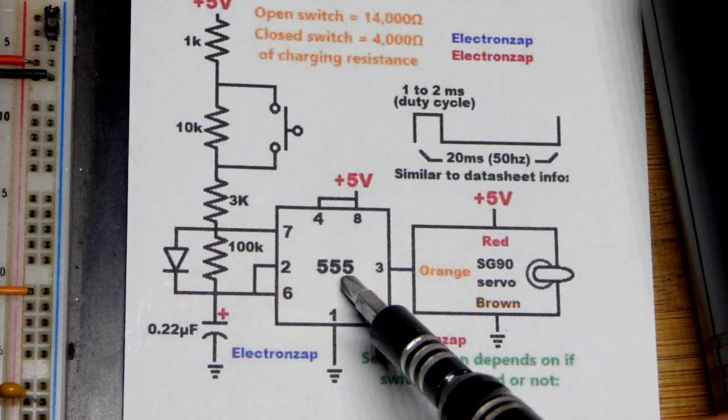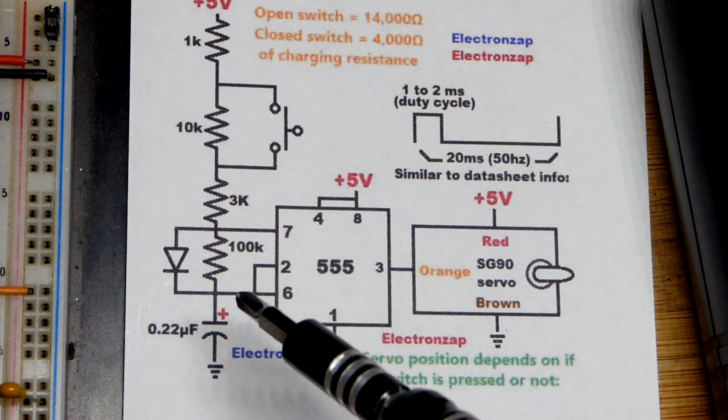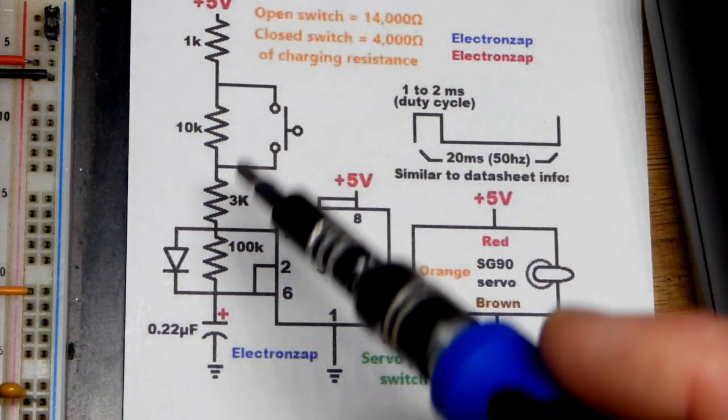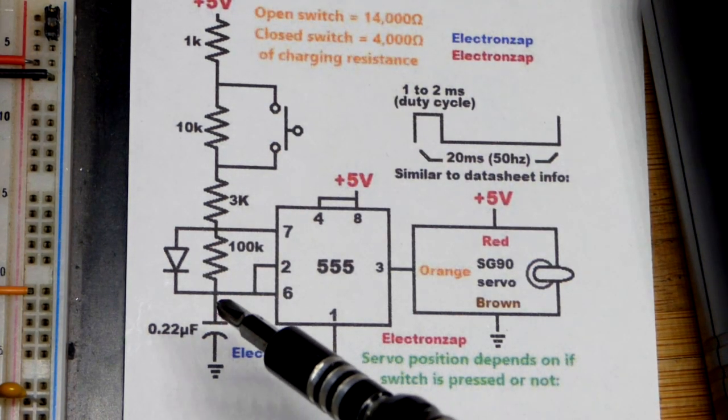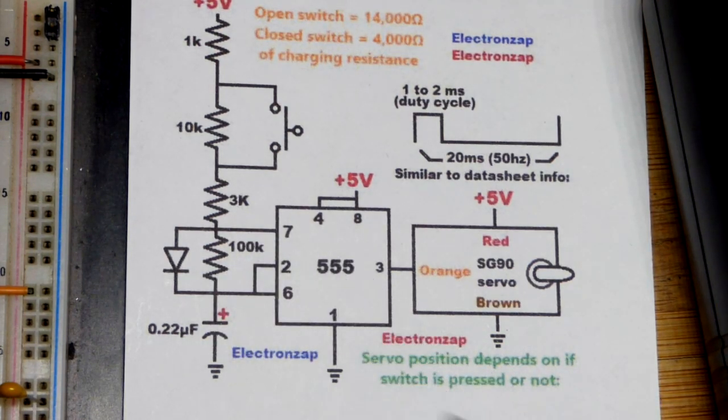And so we got less resistance coming to charge the capacitor up to two-thirds supply voltage. Remember, when it's astable mode, it keeps bouncing between one-third and two-thirds supply voltage. It keeps going up and down. While it's charging, the output is high, and while it's discharging, the output is low. So we got much more resistance while it is discharging.